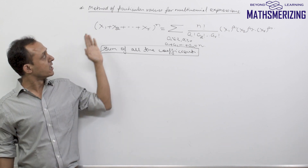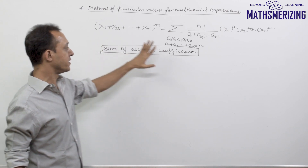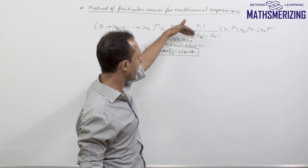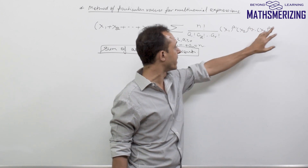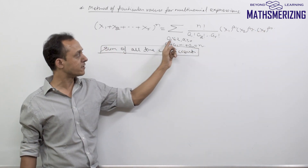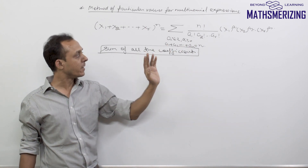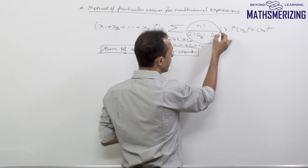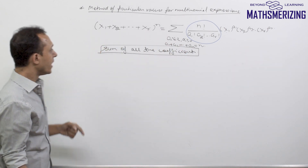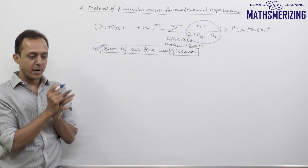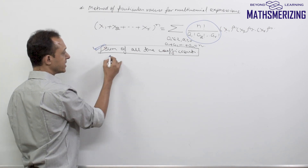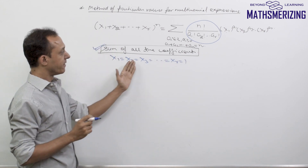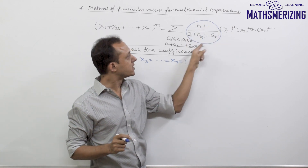Traditionally there have been questions in binomial as well as multinomial where we need to find the sum of all the coefficients. When I see any binomial or multinomial term, I can express it as a1, a2, ar with x1 to the power a1, x2 to the power a2, xr to the power ar, where the sum of all these exponents equals n and each is either 0 or a positive integer. To find the sum of all coefficients, I just need to put the value of all variables as 1, leaving behind only the sum of coefficients.